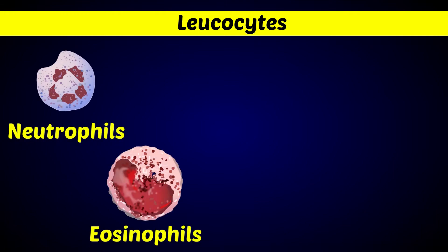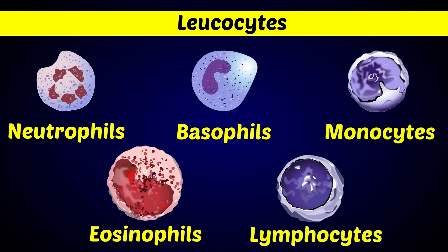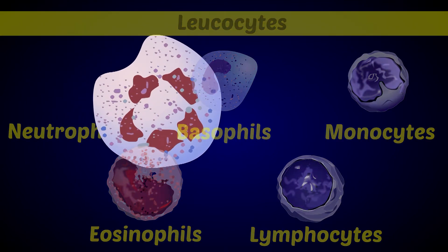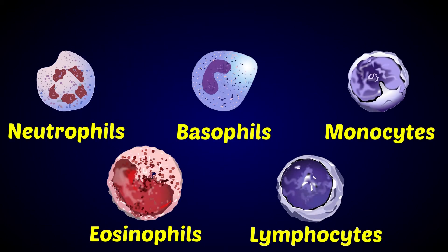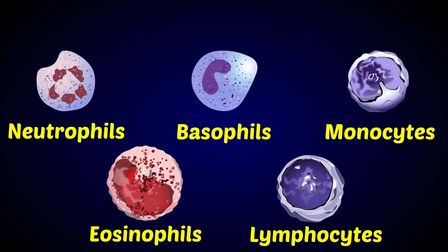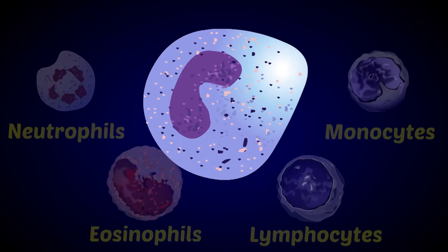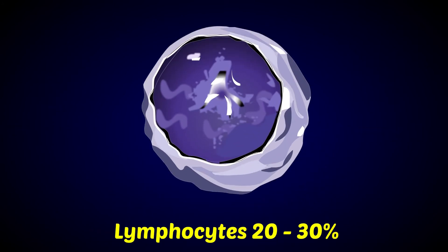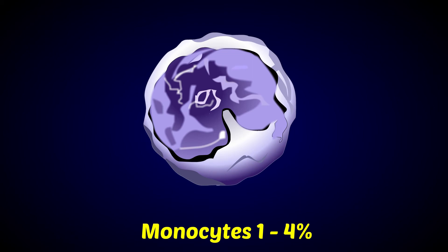The leukocytes are divided into neutrophils, eosinophils, basophils, lymphocytes, and monocytes. Neutrophils make up 60-70%, eosinophils 0.5-3%, basophils 0.5-1%, lymphocytes 20-30%, and monocytes 1-4%.